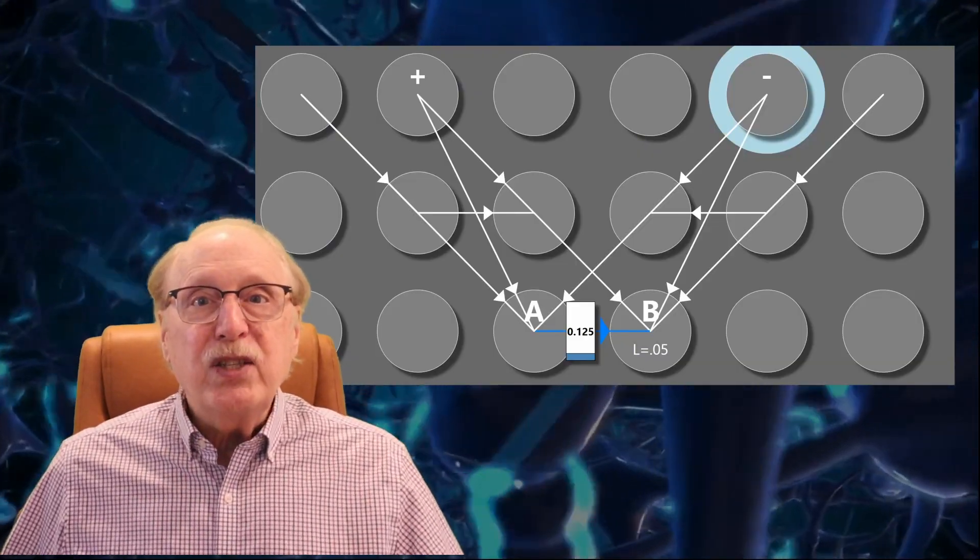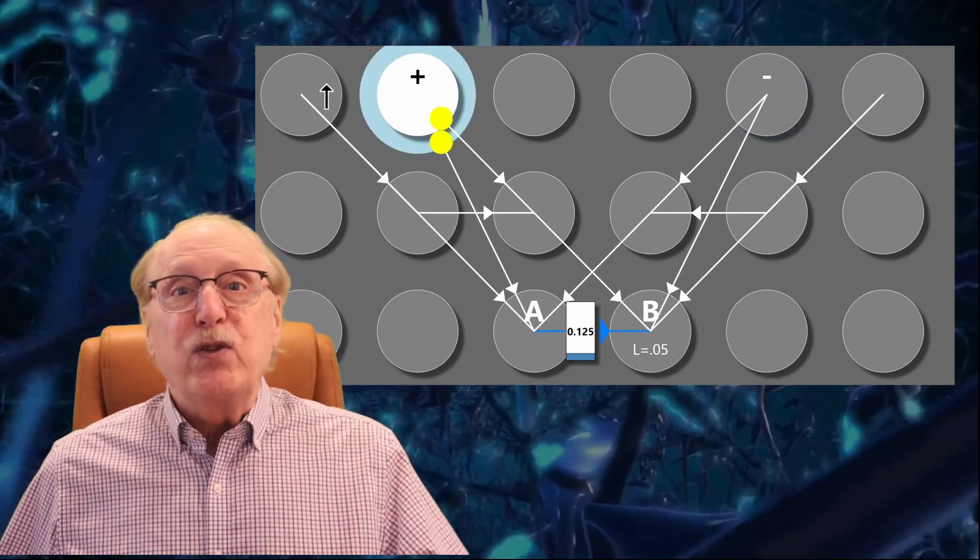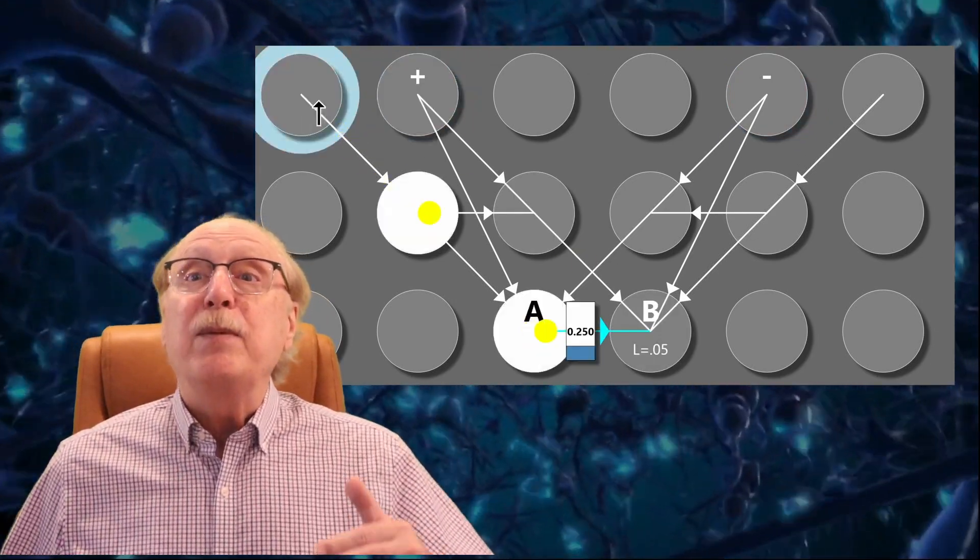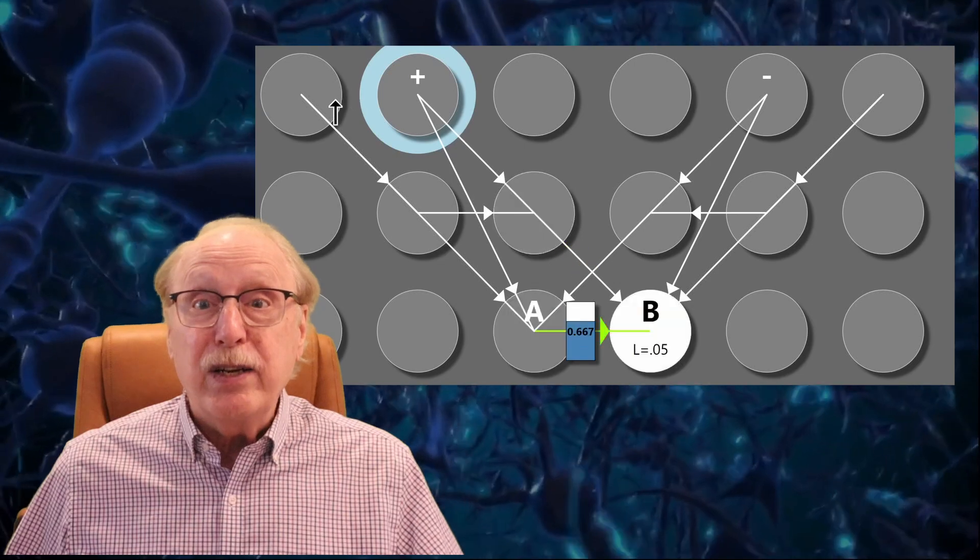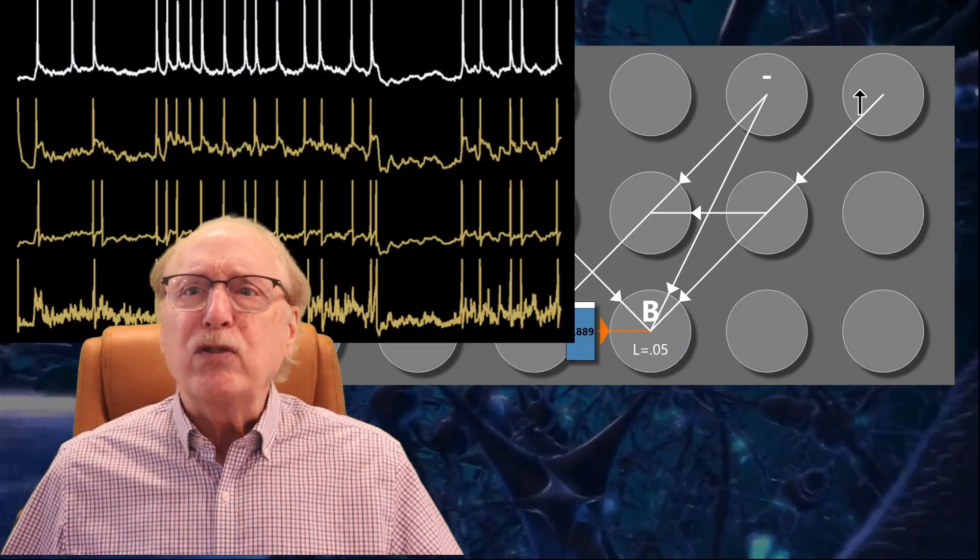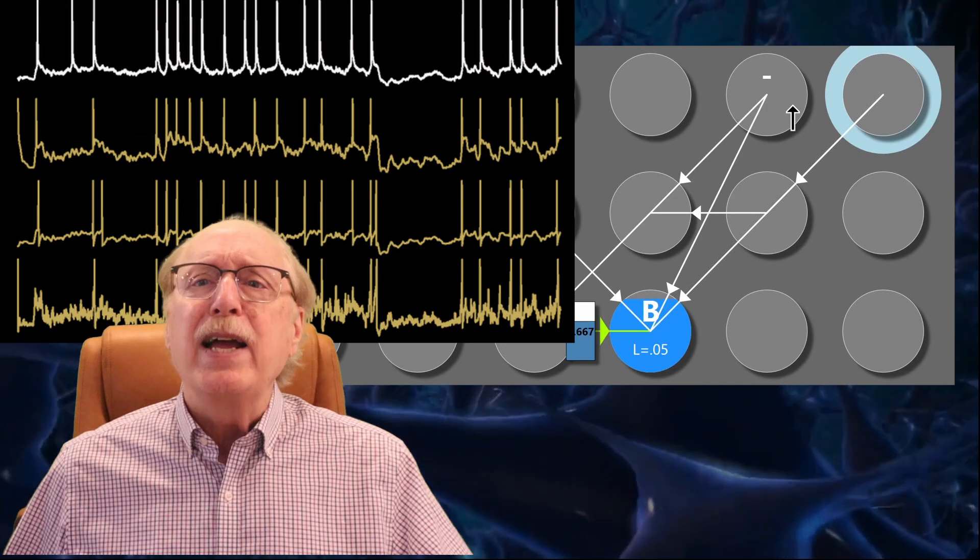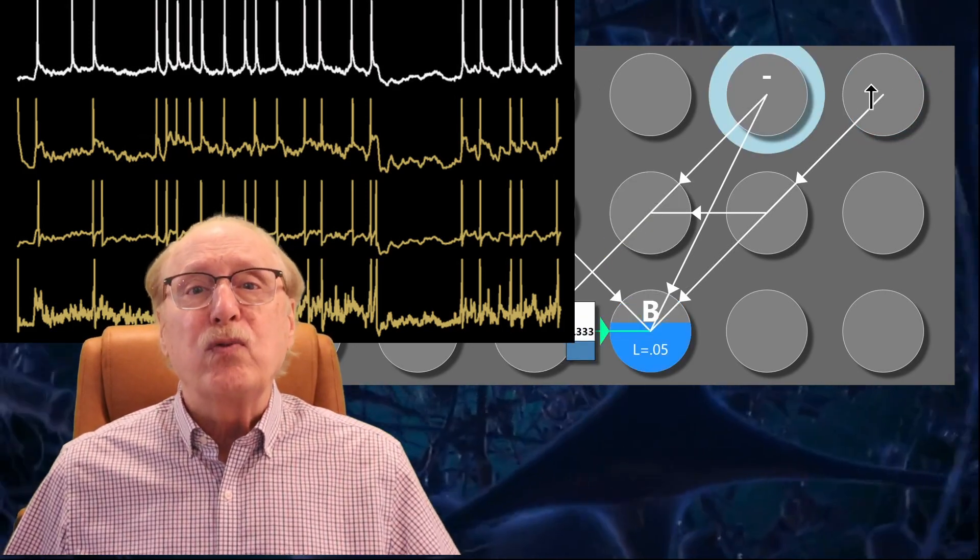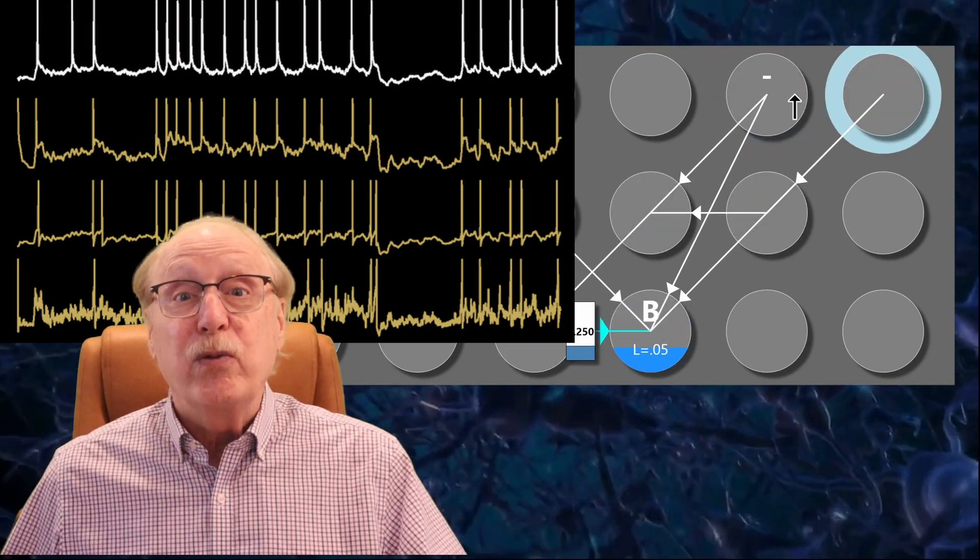The more precision you want in setting a synapse weight, the more accurately you need to control the relative spike timing. In this simulation, the relative spike timing is selected to be in precise one millisecond intervals. In a brain where electrochemical noise levels are high, it's impossible to control spike timings with that degree of precision.